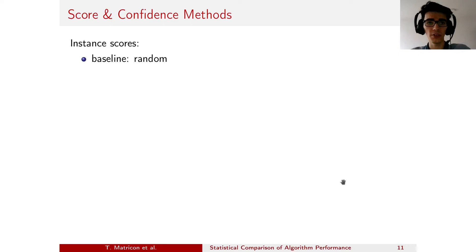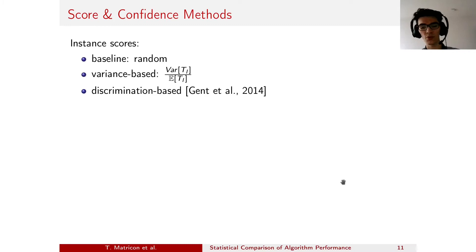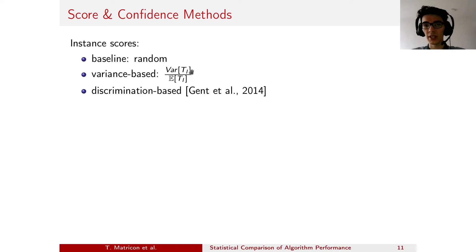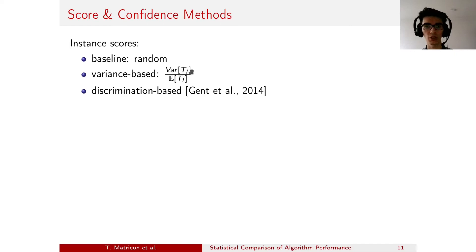Here are the score and confidence methods. For instance scores, we have the baseline method which is random — basically selecting a random instance that hasn't already been run. Then, using runtimes of other algorithms, we can discriminate between instances based on runtime data. The first idea is to base the score on the variance of the runtime data, which accounts for discrimination power, divided by the expected runtime to account for cost. We also have a similar discrimination-based method based on the work of Gent et al.